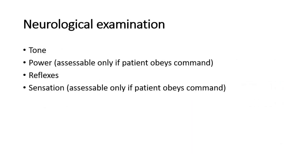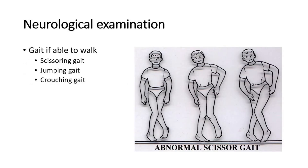The neurological examination is as usual, including checking tone, power, reflexes, and sensation. Also, if the patient is able to walk, we assess their gait. Expected findings include scissoring gait, shown in this picture. Jumping gait or crouching gait can be noted as well.